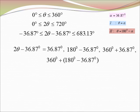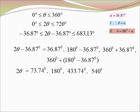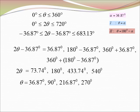Moving −36.87° to the right side gives: 2θ = 73.74°, 180°, 433.74°, 514°. Therefore θ = 36.87°, 90°, 216.87°, and 257°.